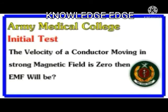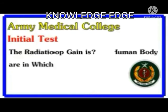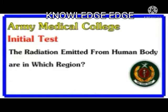The velocity of a conductor moving in a strong magnetic field is zero, then the induced EMF will be zero. The open loop gain is 10 to the power 5.